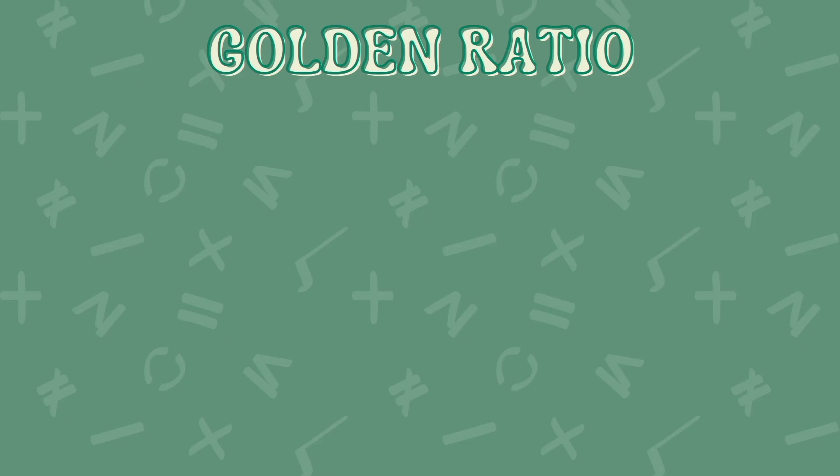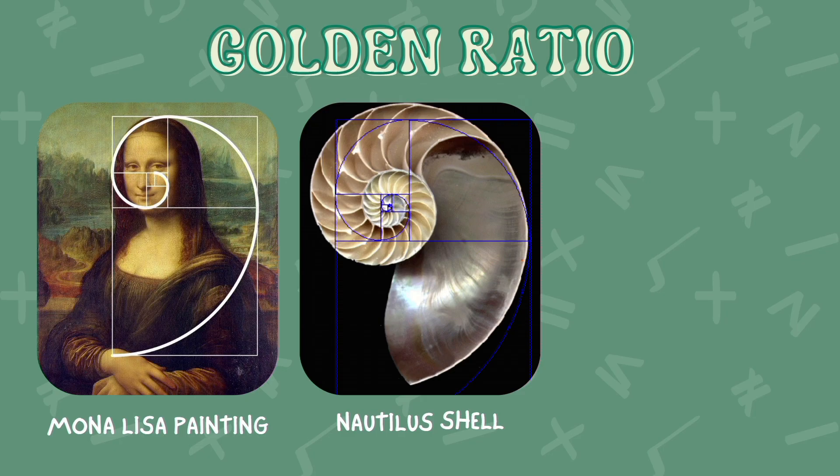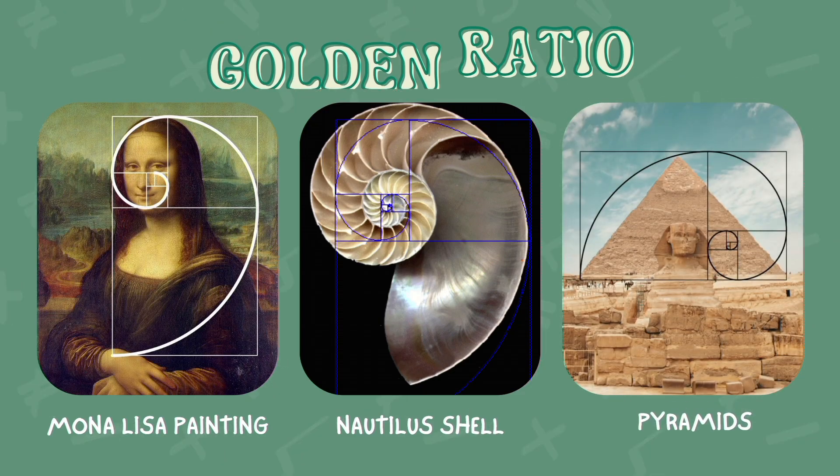The golden ratio can be found in nature like in the Mona Lisa painting, in the Nautilus shell, and also in the pyramids.